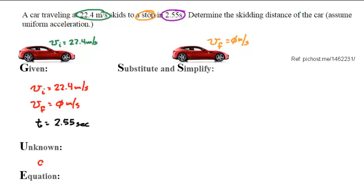The thing that I don't know is the distance in the x-axis—that's in meters. And the equation that I'm going to use is: distance equals one-half times the velocity final plus the velocity initial, times time.